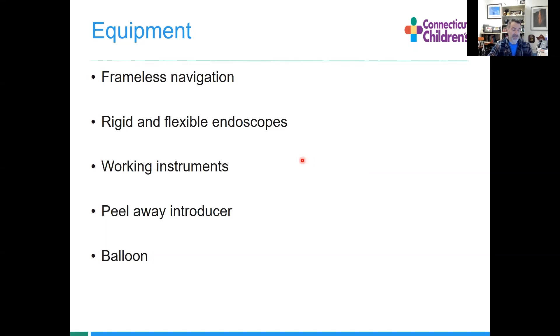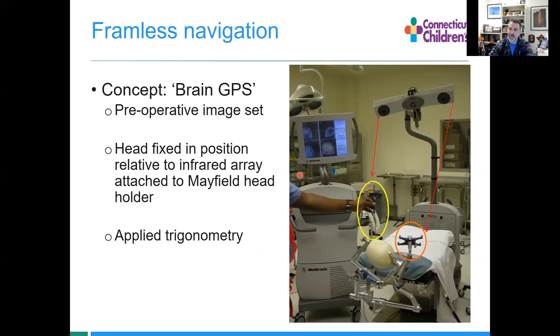In the operating room we've got some equipment we need familiarity with: frameless navigation, the endoscopes themselves, some instruments we use, and how we get in. Frameless navigation - if you're a PGY1 and haven't seen this before, think of it as brain GPS. The head is fixed in position. This device has infrared sensors or reflectors, and ultimately this is applied trigonometry. We triangulate the position of this pointer relative to this array, and if we've pre-loaded the patient's anatomy and correlated it to where the head is positioned, we can navigate very effectively and accurately.